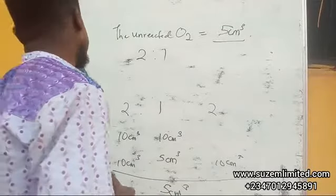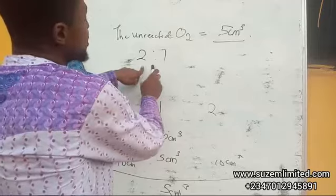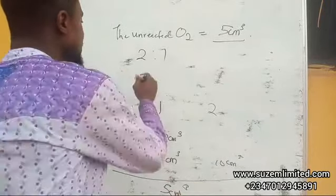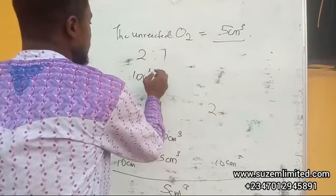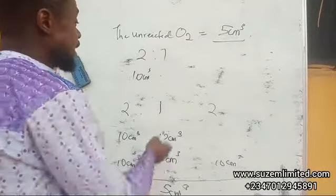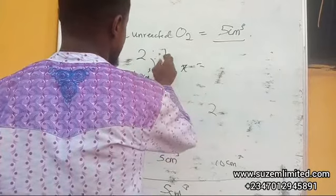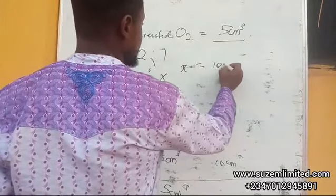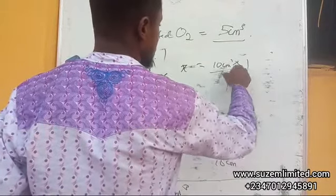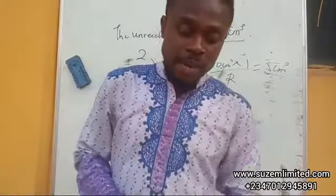That's the volume of oxygen that did not react. 5 cm³ of oxygen combined with 10 cm³ of hydrogen in ratio 2 is to one, so 5 cm³ will remain. No matter the volume of oxygen you pump there, you can only combine with hydrogen in ratio of 2 is to one. If here is 10 cm³, you can cross multiply. x equals 10 cm³ times 1 over 2, which equals 5 cm³. That is it.